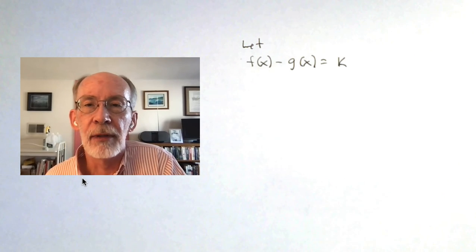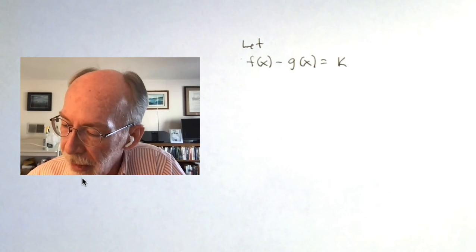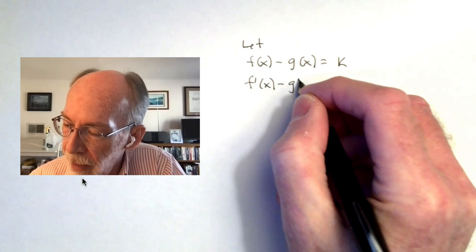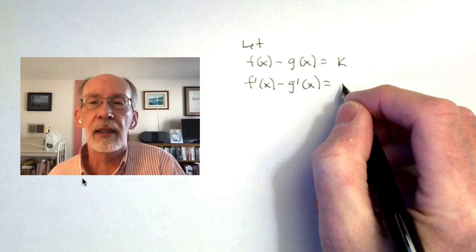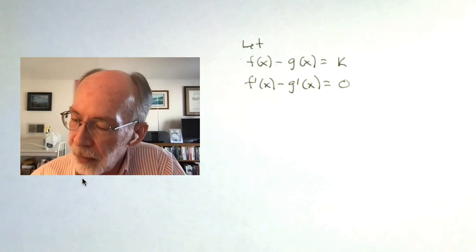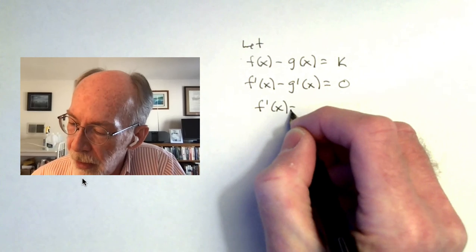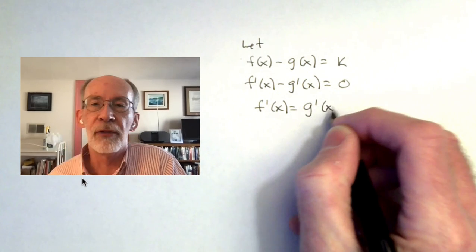If two functions are equal, their derivatives, of course, have to be equal so that I can say that f prime minus g prime equals the derivative of that constant, which is zero. And this means, of course, that f prime has to be equal to g prime.